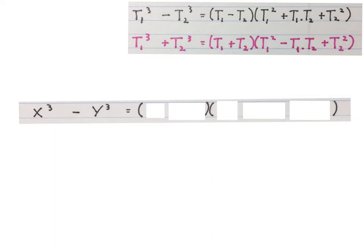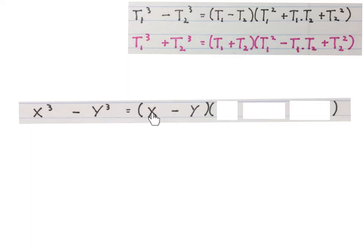You take the cube root of this value and you write it here. You write down this sign over here and you write the cube root of this value over there. It's quite easy because it looks exactly the same as here, just without the cubes.